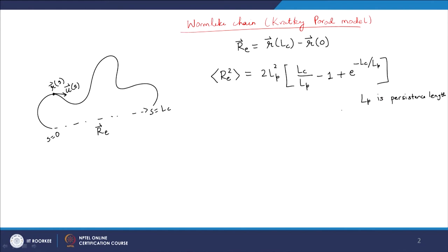We will now take two extremes: one where the persistence length LP is very high, and another where LP is very small. To recall briefly, the correlation of the tangent vector goes like exponential of −|S − S'|/LP, so the magnitude of LP characterizes the amount of correlation in the system.